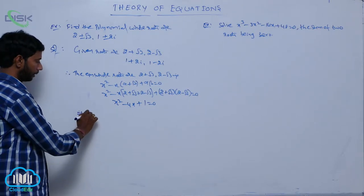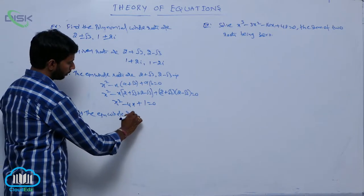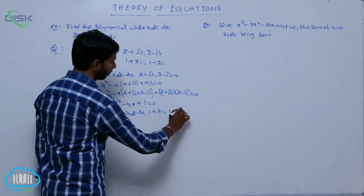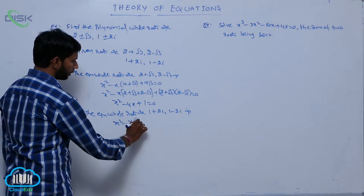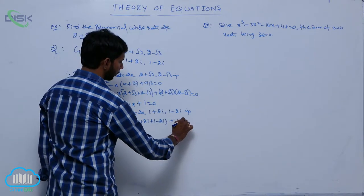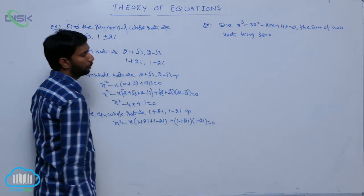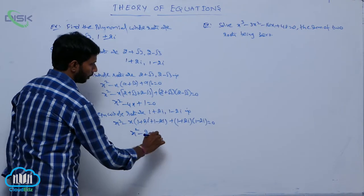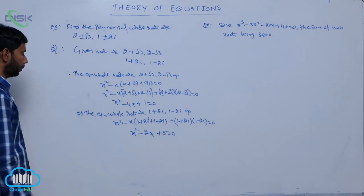And next, the equation whose roots are 1 plus 2i and 1 minus 2i is x squared minus x times (1 plus 2i plus 1 minus 2i) plus (1 plus 2i)(1 minus 2i) equals 0. That gives x squared minus 2x plus 5 equals 0.